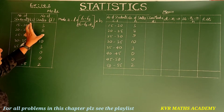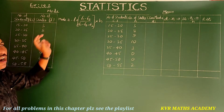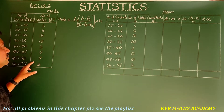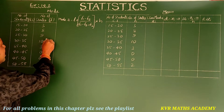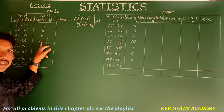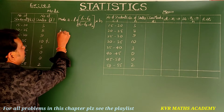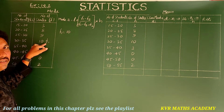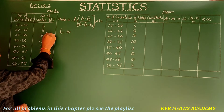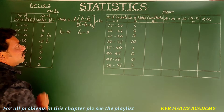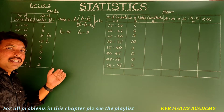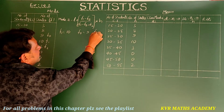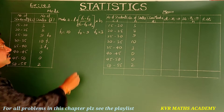f1 is the frequency of the modal class — the class with the highest frequency. The highest frequency here is 10, so f1 = 10. f0 is the frequency of the class preceding the modal class, which is 9, so f0 = 9. f2 is the frequency of the class succeeding the modal class, which is 3, so f2 = 3.